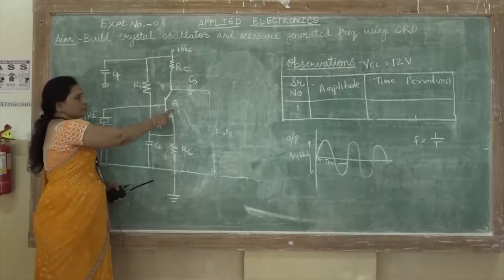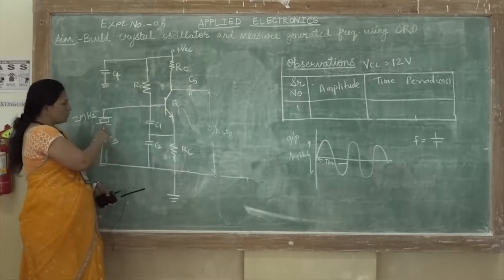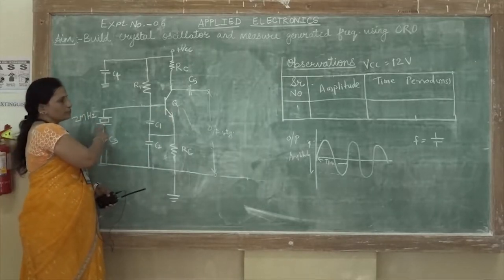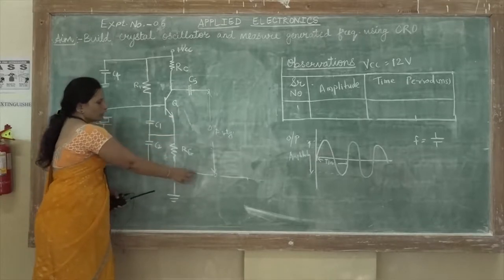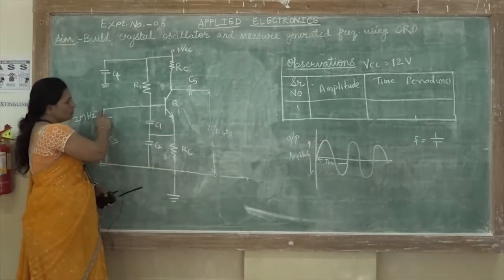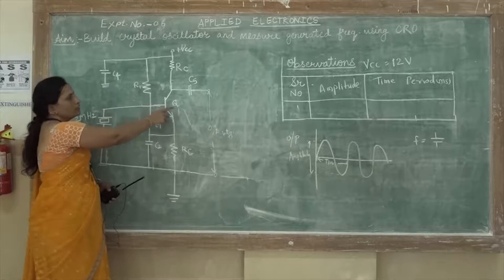In the amplifier section we are using the transistor while in the feedback network you have to use the crystal oscillator. The part of this output signal is given as an input through this crystal to the base of the transistor.